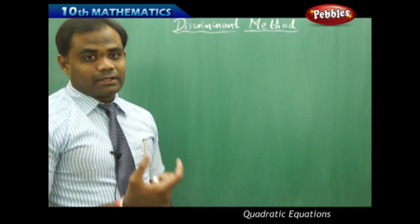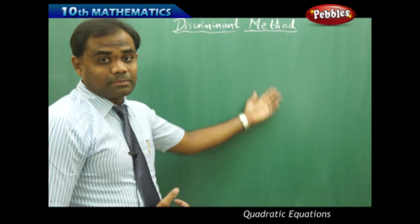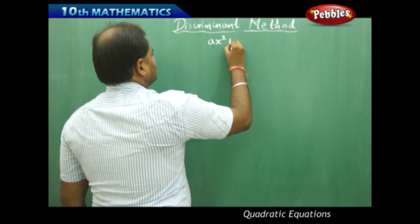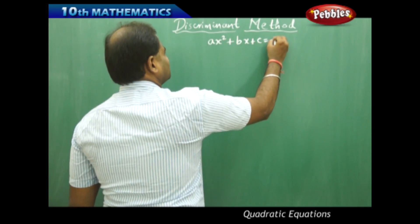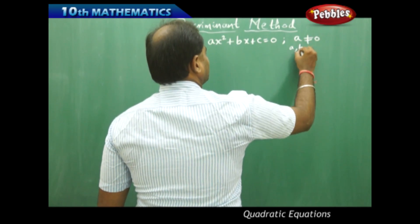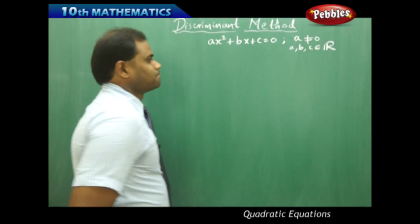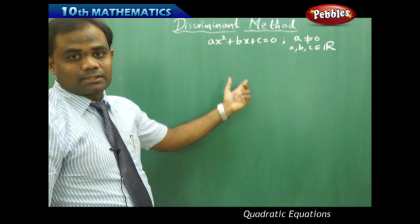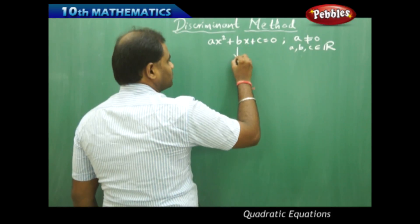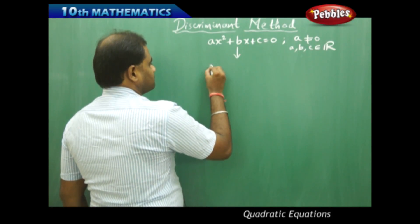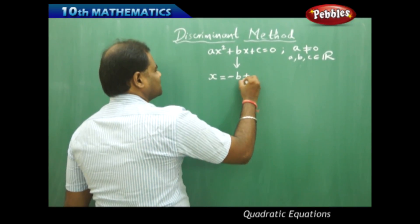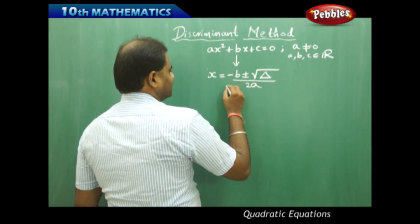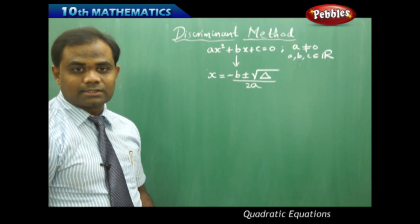Take the general quadratic equation, the standard form ax squared plus bx plus c equal to zero, with a not equal to zero, where a, b, and c are all real numbers. This equation has two roots. We know that a quadratic equation with degree 2 has at most two roots, and the two roots are given by the formula: x equals minus b plus or minus the square root of delta, all divided by 2a, where one root uses plus and the other uses minus.